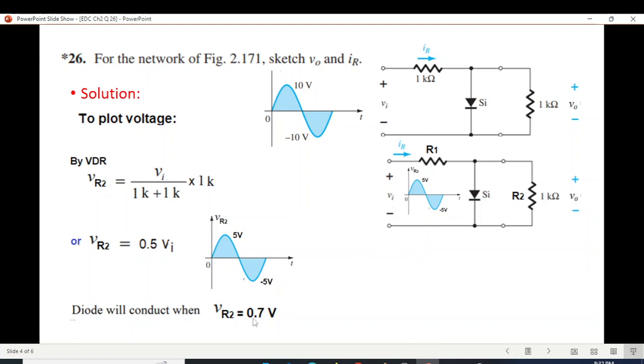And the diode will conduct when VR2 is 0.7 volt. So when this voltage is 0.7 volt, the diode will start conducting and we have seen that the output will be 0.7 volt. And what will happen during the negative half cycle, the diode will not conduct. And so the negative half will appear at the output.